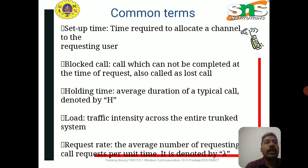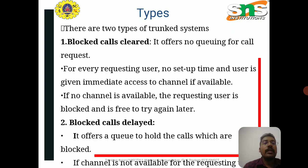The common terms used in trunking theory are: setup time — the time required to allocate a channel to the requesting user; blocked call — a call which cannot be completed at the time of request, also called a lost call; holding time — the average duration of a typical call, denoted by H; load — the traffic intensity across the entire trunked system; and request rate — the average number of call requests per unit time, denoted by lambda.